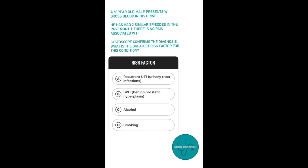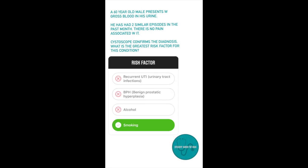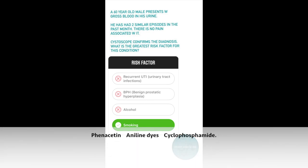Question number eight: A 60-year-old male presents with gross blood in his urine. He has had two similar episodes in the past month. He does not have any pain associated with this. Cystoscopy confirms the diagnosis. What is the greatest risk factor for his condition? Option A, recurrent UTIs. Option B, BPH. Option C, alcohol. Option D, smoking. When a patient presents with painless gross hematuria, always think about bladder cancer. Smoking is one of the greatest risk factors for it. Other risk factors are phenacetin, aniline dyes, and cyclophosphamide.